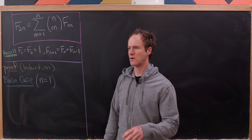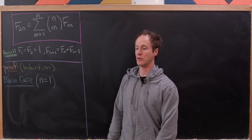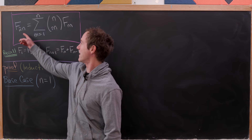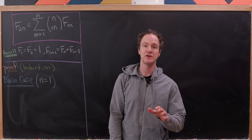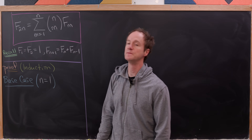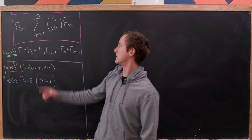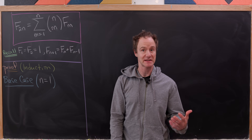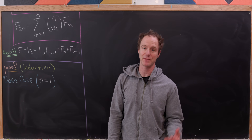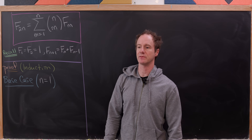Today we're going to look at a nice identity involving two of my favorite types of numbers: Fibonacci numbers and binomial coefficients. We're going to prove that f sub 2n, the 2nth Fibonacci number where n is a positive integer, is equal to the sum as m goes from 1 to infinity of n choose m times f sub m.